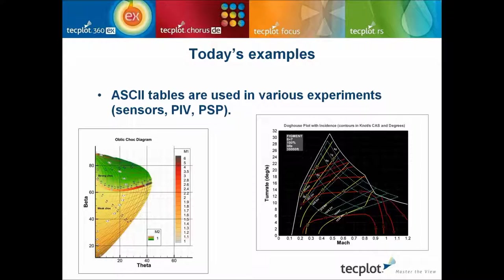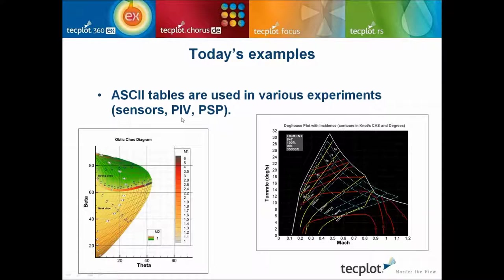Today's examples will focus on ASCII tables, which are used in various experiments, from basic sensor data to advanced measurement techniques such as PIV and PSP. We are wishing to do a webinar about advanced measurement techniques, for example TSP and PSP. If you have data and wish to present it, you are welcome to contact us and we'll be glad to have a common webinar.